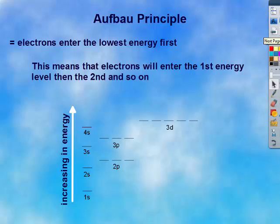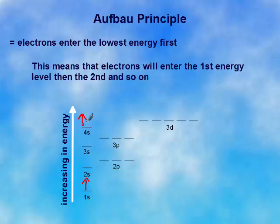The Aufbau principle says electrons enter the lowest energy first. This means that electrons will first enter the first energy level, and then the second energy level. When we have an electron filling, it has to go down to the 1s first. It can't enter the 4s first. The electrons are lazy. They want to go to the lowest energy available.